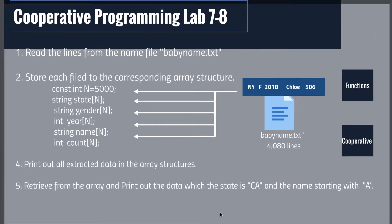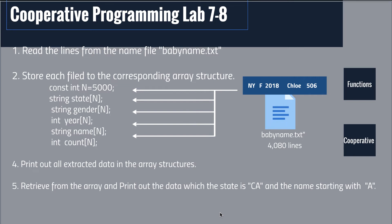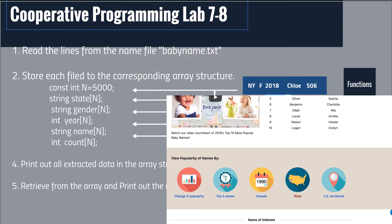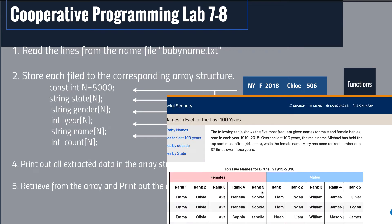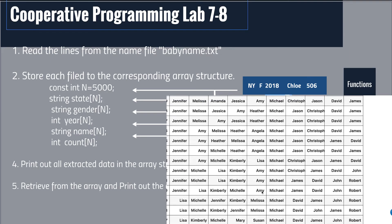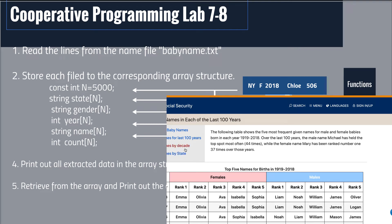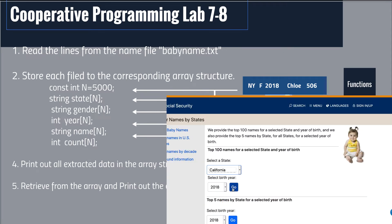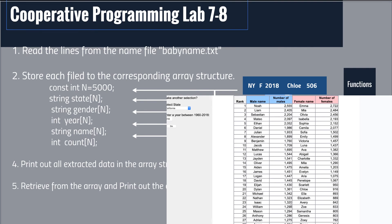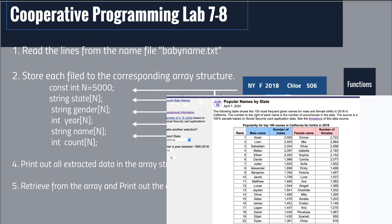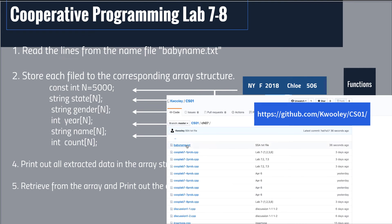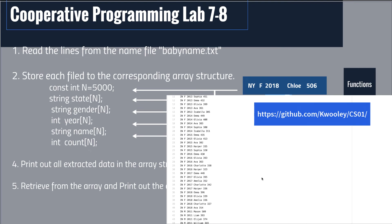Now let's have programming lab 7.8. I have prepared a somewhat large file from the Social Security website, where you can find popular baby names by state or by year. I extracted the names and made a file with over 4,000 lines, which can be downloaded from my GitHub site. Click on chapter 7 and you will find the file baby_name.txt.